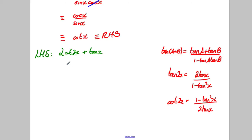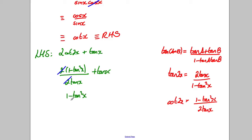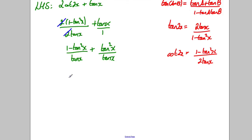So 2cot(2x) becomes [1 − tan²(x)] / [2tan(x)] multiplied by 2, and the 2s cancel, giving [1 − tan²(x)] / tan(x). Adding tan(x) to this — multiplying tan(x) by tan(x)/tan(x) gives tan²(x)/tan(x) — and combining the tops: 1 − tan²(x) + tan²(x) over tan(x), which gives 1/tan(x), and by definition that is cot(x), the right-hand side.